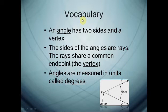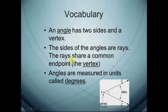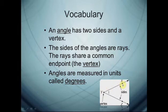After that, the angle. What is the meaning of the angle? An angle has two sides and a vertex, and the two sides are rays. The rays share a common end point — this point is called the vertex. Angles are measured in units called degrees. For example, this angle XYZ: point Y is the vertex, and ray YX and ray YV are the two sides.